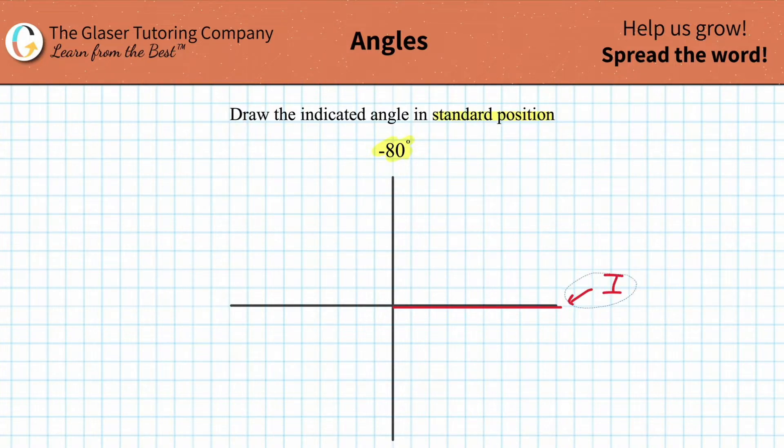Now the next thing you can do is label your degrees on this entire coordinate system. Zero degrees will always start here on the right-hand side on the positive x-axis, and then we rotate counterclockwise.